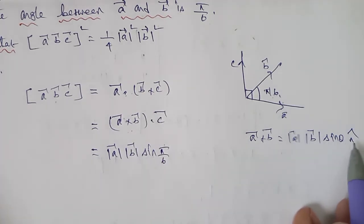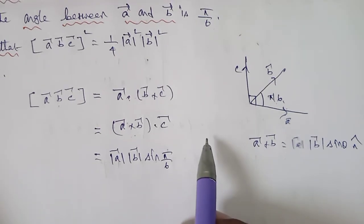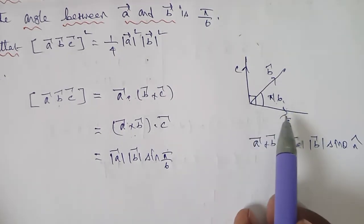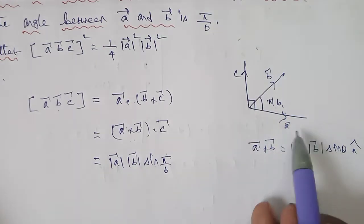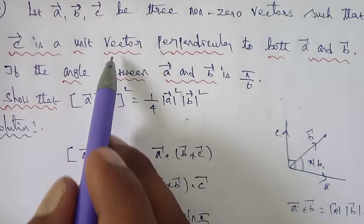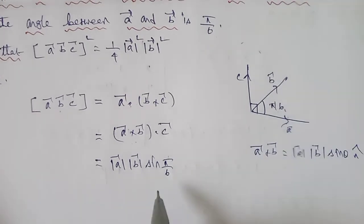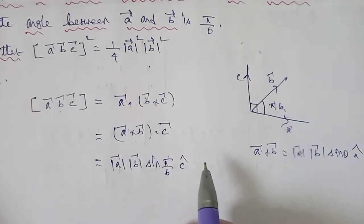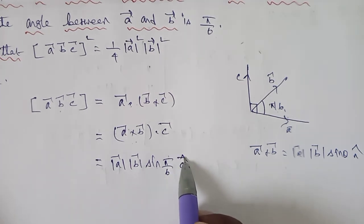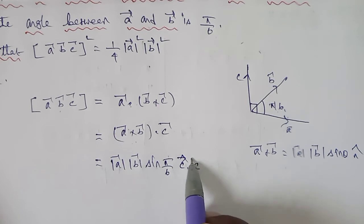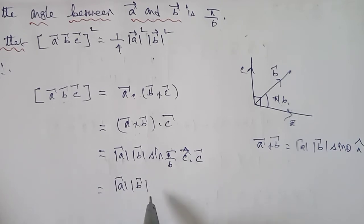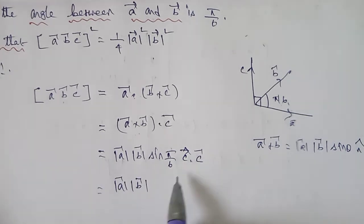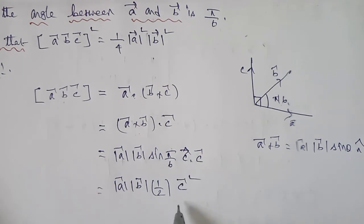Now n-cap is a unit vector. In the given question, c vector is a unit vector perpendicular to both a and b, so we can write c vector equals n-cap. The values of |A| and |B|, sin(π/6) equals 1/2. So A cross B dot C equals |A| × |B| × 1/2 × c vector.